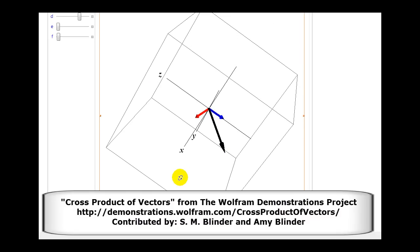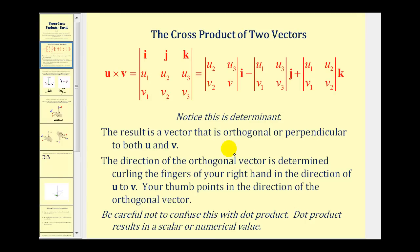You might be wondering why the cross product points in this direction rather than the opposite direction — that's an important thing to consider. Be careful not to confuse the cross product of two vectors with the dot product of two vectors. The dot product results in a scalar or numerical value; however, when we cross two vectors, we get another vector that is perpendicular to both.